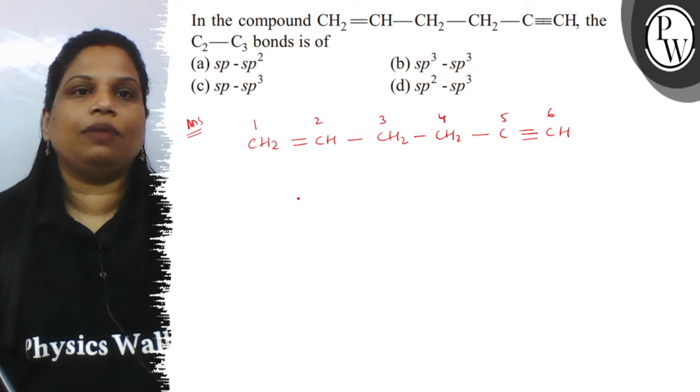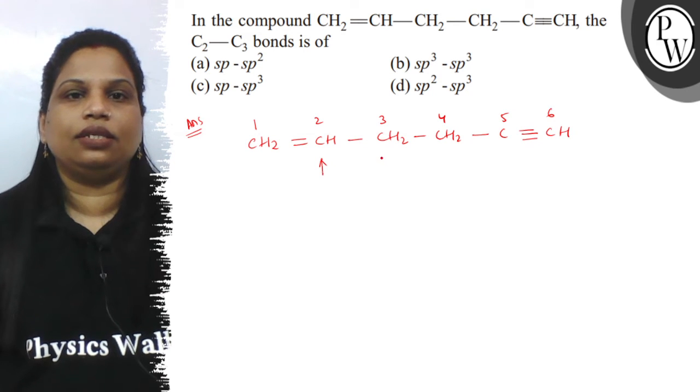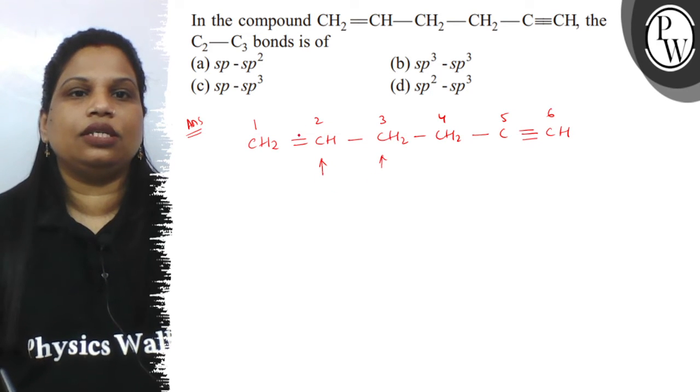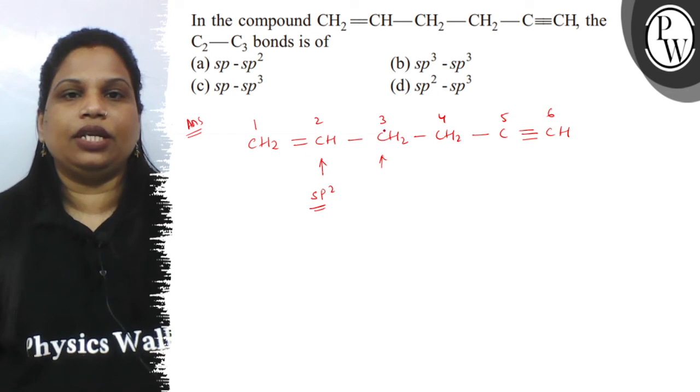We have to find the hybridization of C2 and C3. If you can see, the C2 carbon has a double bond, so it is SP2 hybridization.